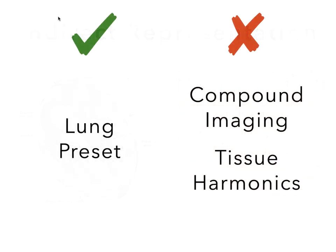Ensure that you set your probe to a lung preset if it's available. Most newer machines have such a preset to optimize lung scanning. If your machine and probe do not have a lung preset, you will want to turn off all the filters and settings that optimize your image, as we are trying to accentuate any ultrasound artifacts. You want to turn off compound imaging and tissue harmonics imaging. Your image may look grainier, but this is perfect for lung ultrasound.